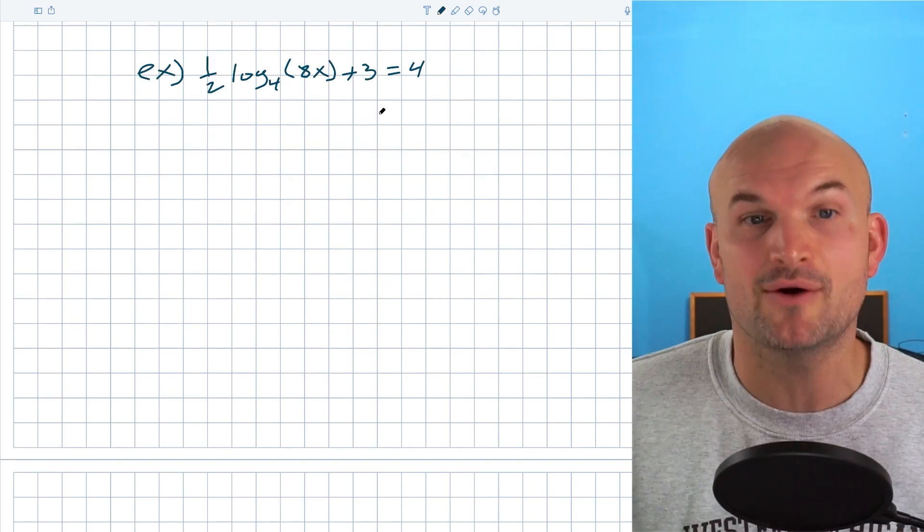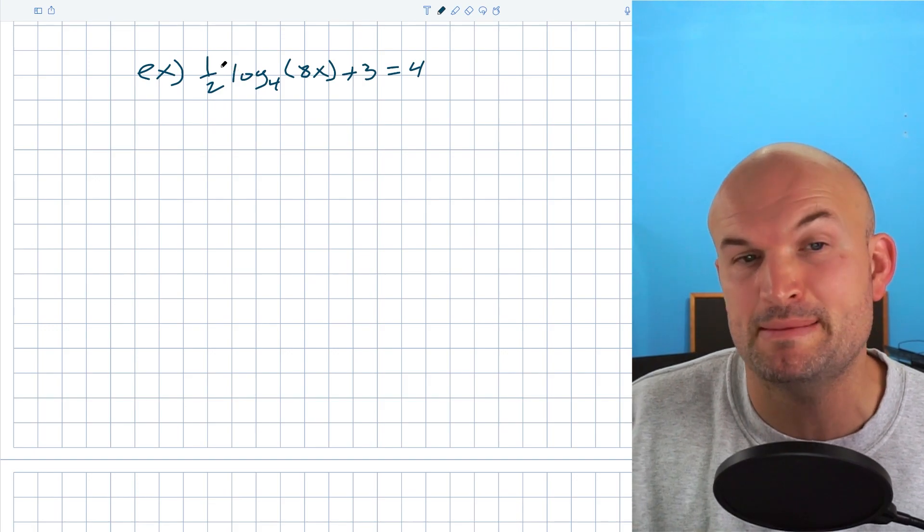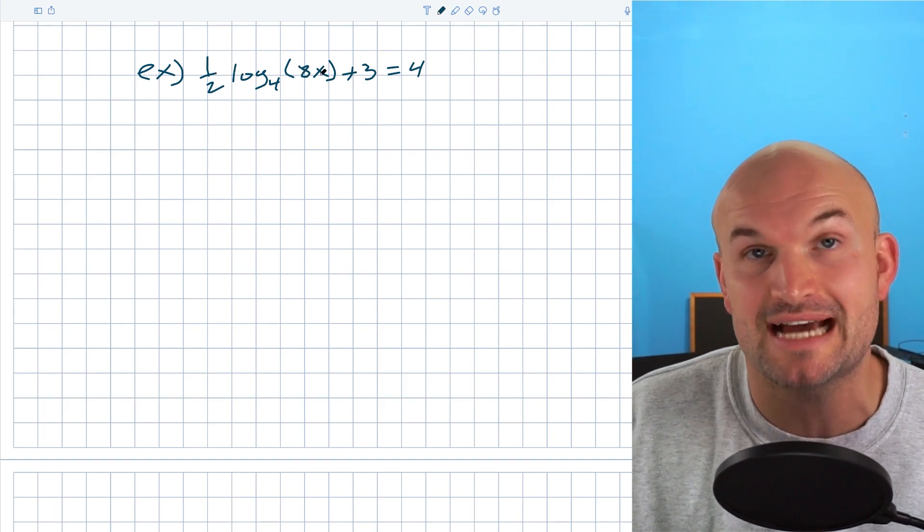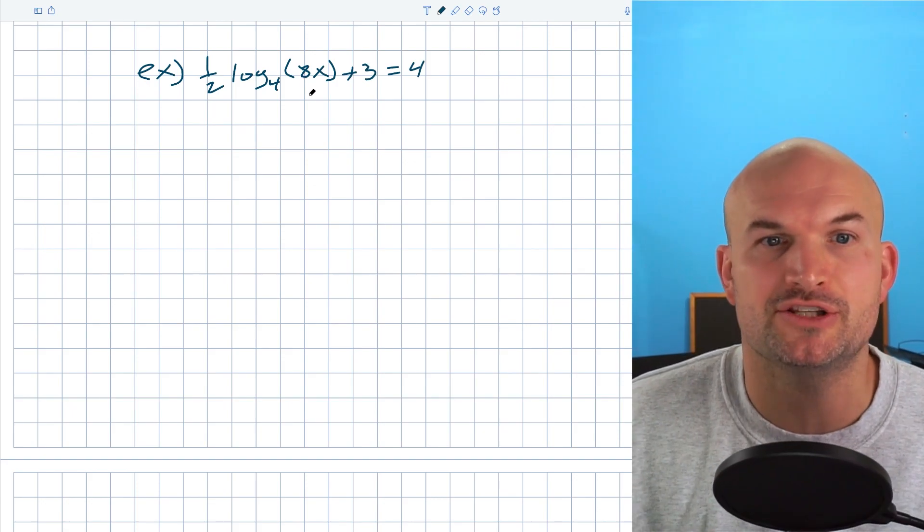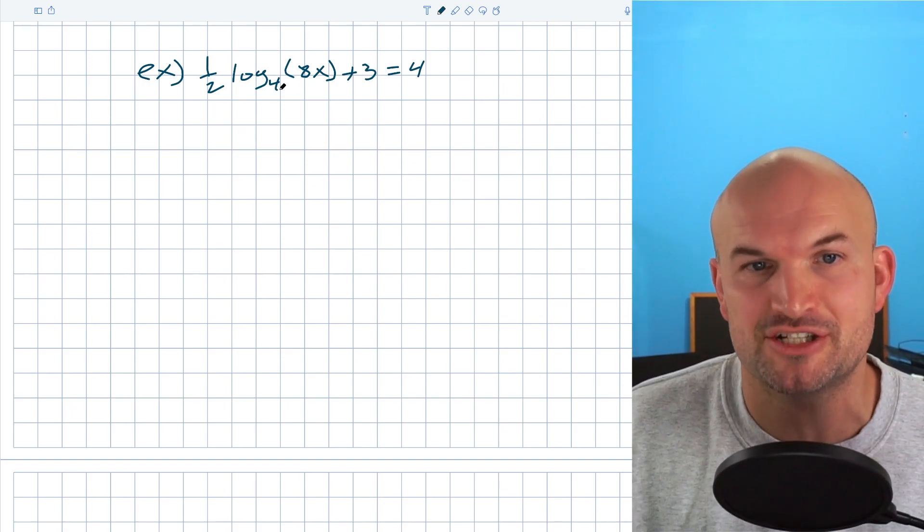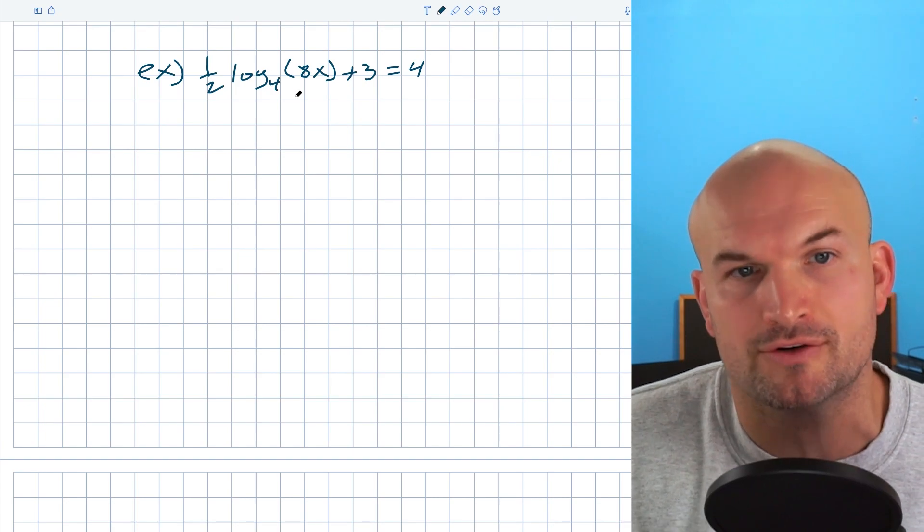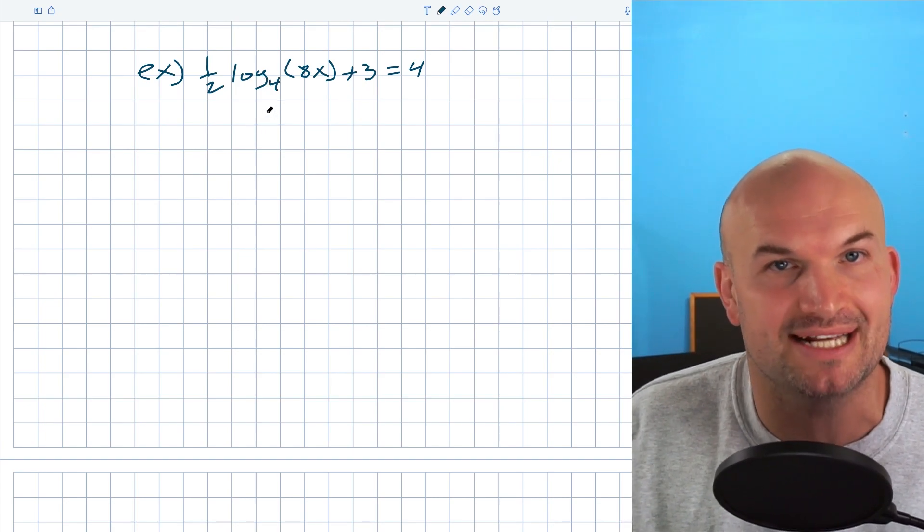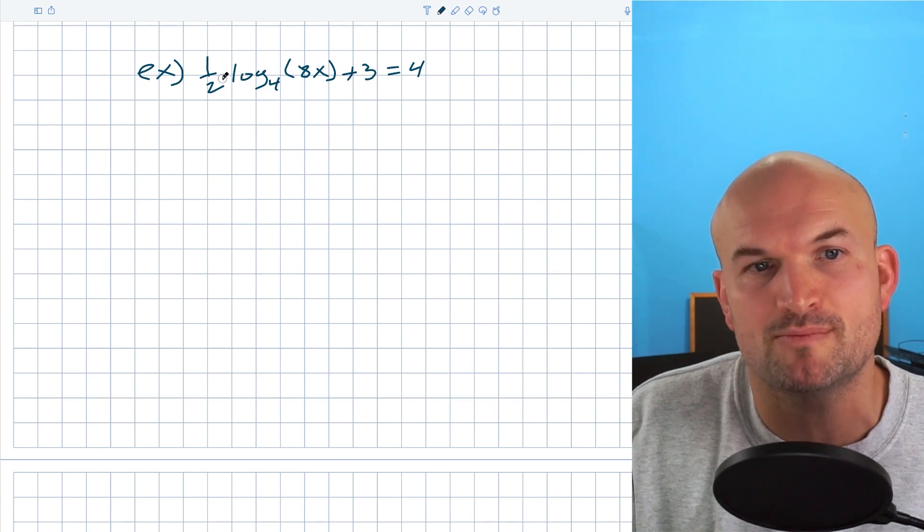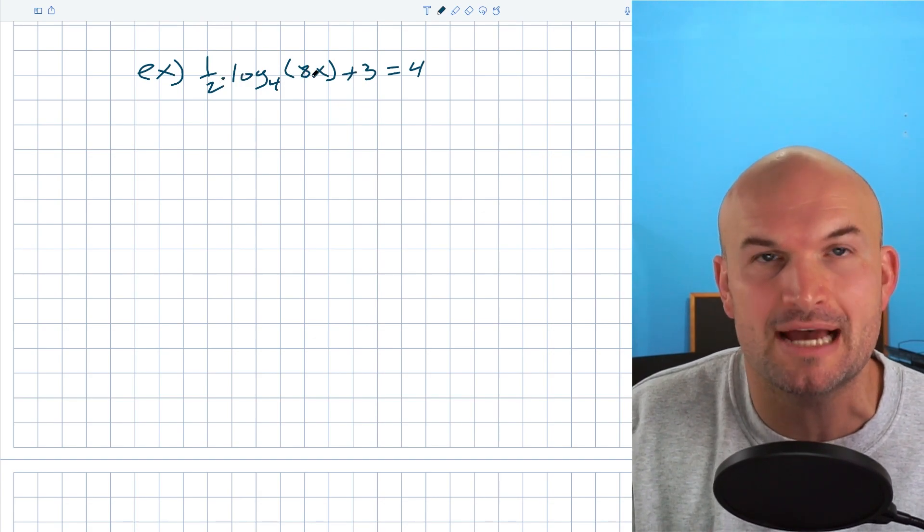So in this example, you can see there's a lot going on here. We have a logarithmic multiply by one half. We have 8 times x inside of the arguments. And then we have plus 3 on the outside. The main thing we want to do here is whenever we're trying to exponentiate, we want to make sure that we isolate our logarithm. This rule of logarithm only works when it was just a logarithm by all by itself. So I need to get rid of this multiplying by one half and adding 3.